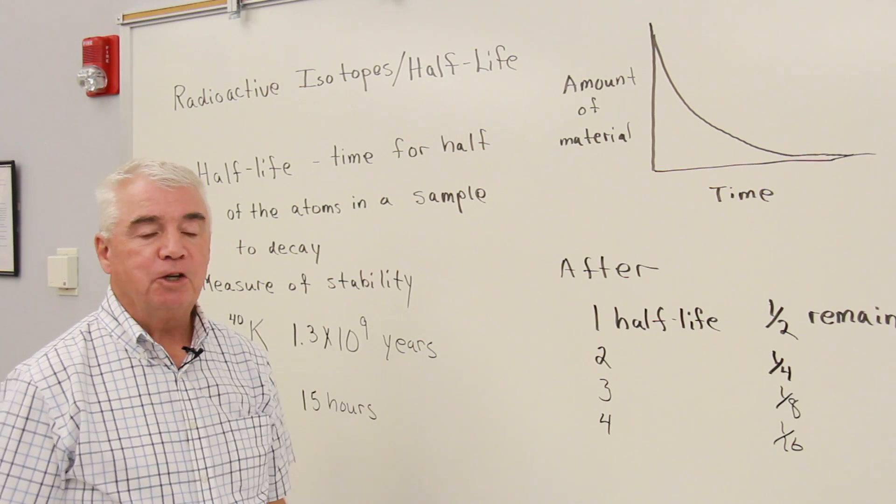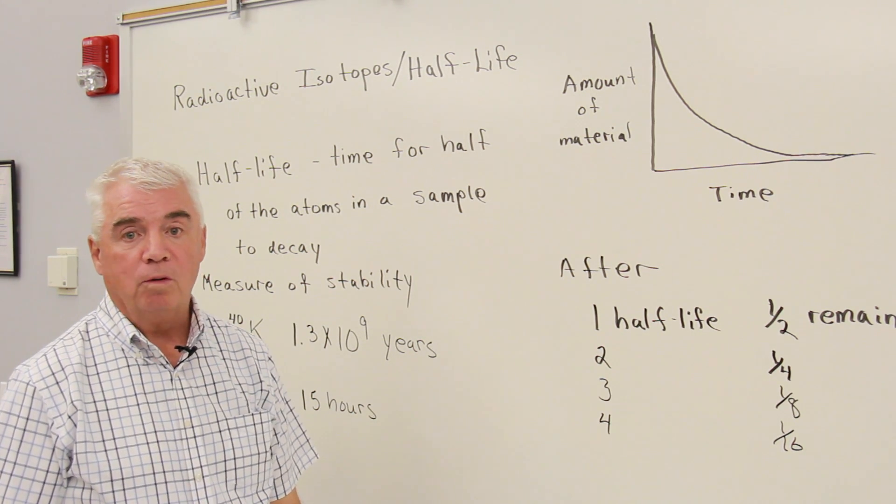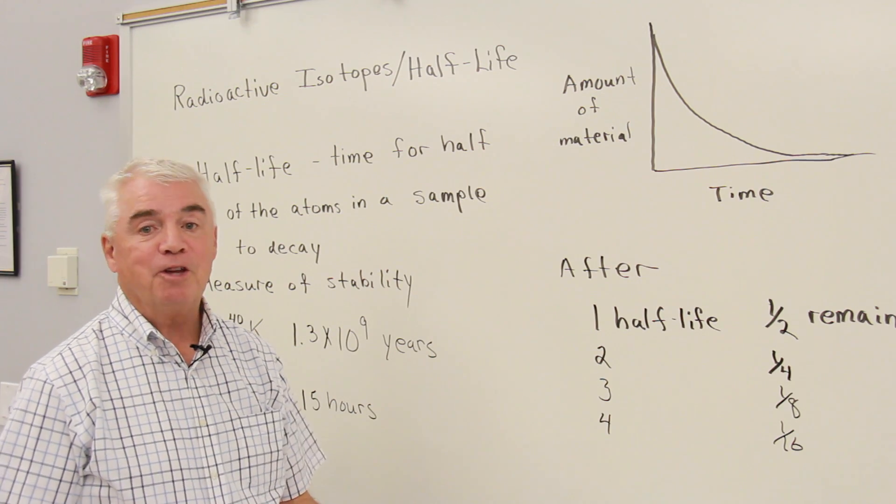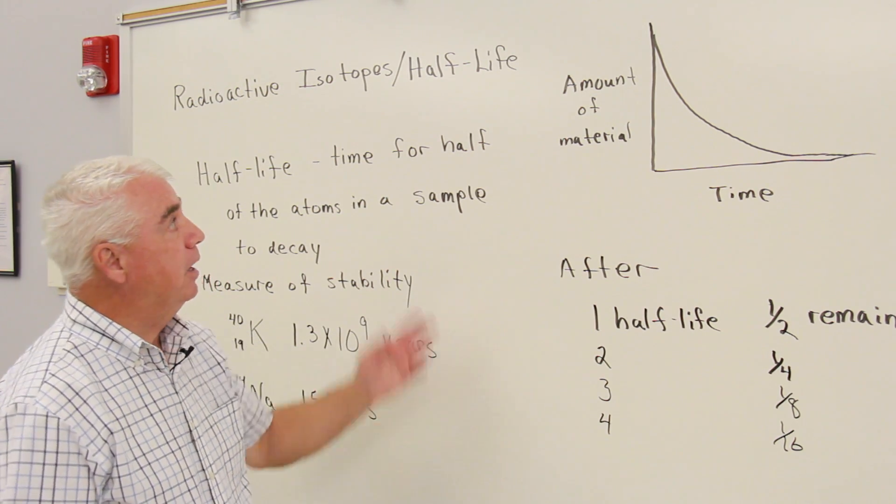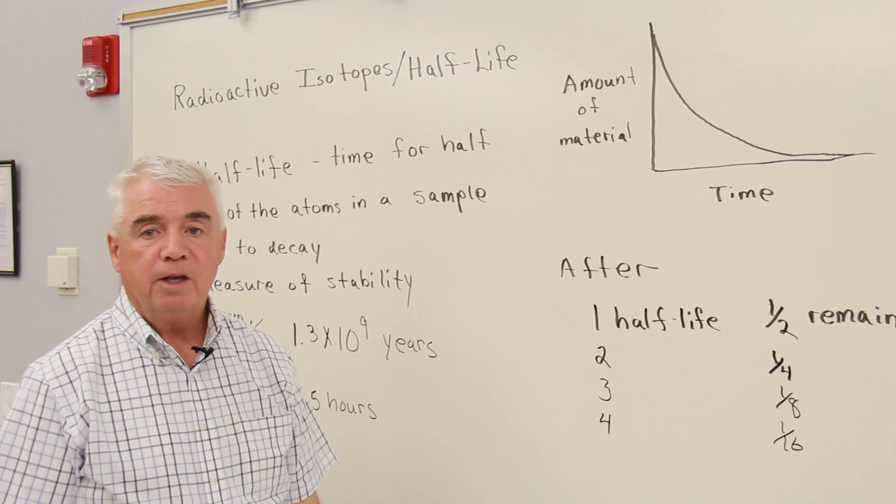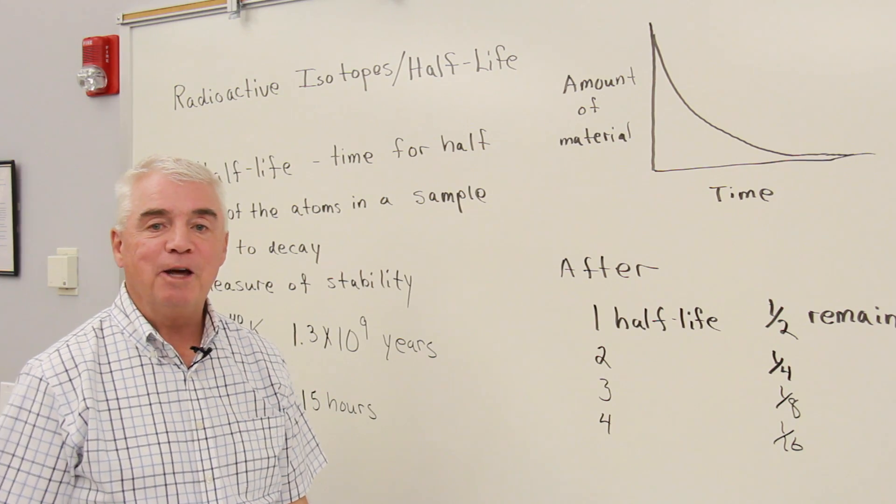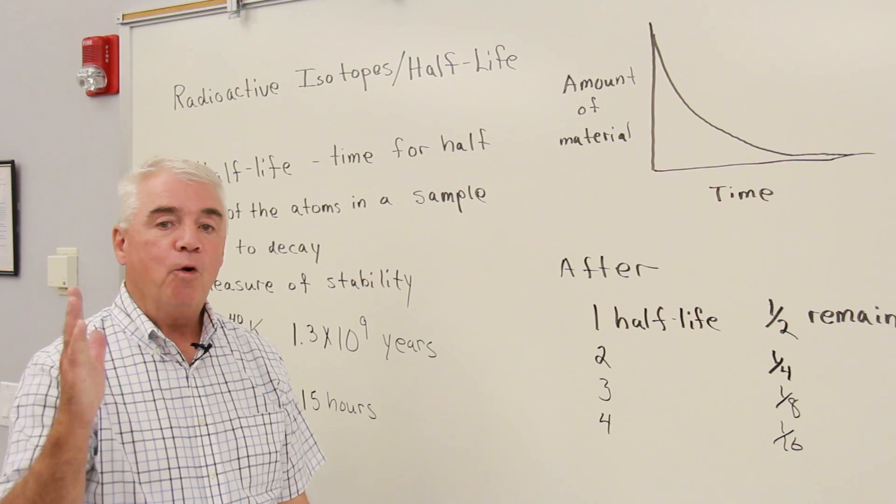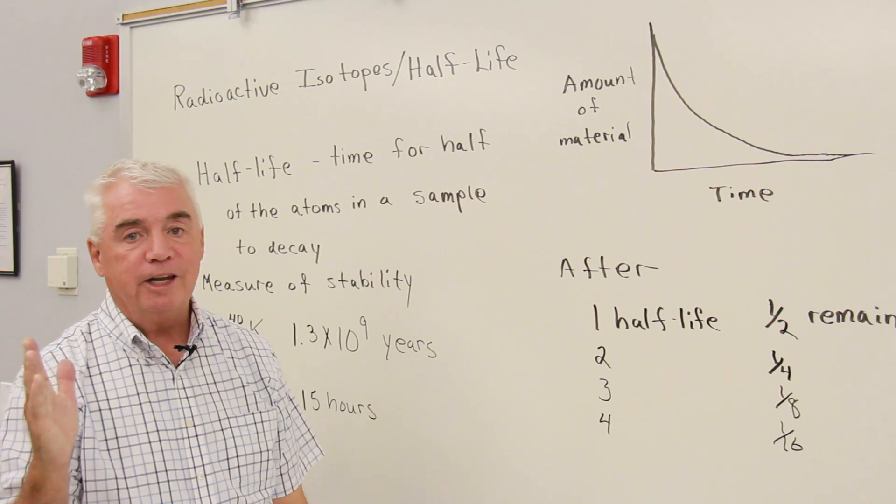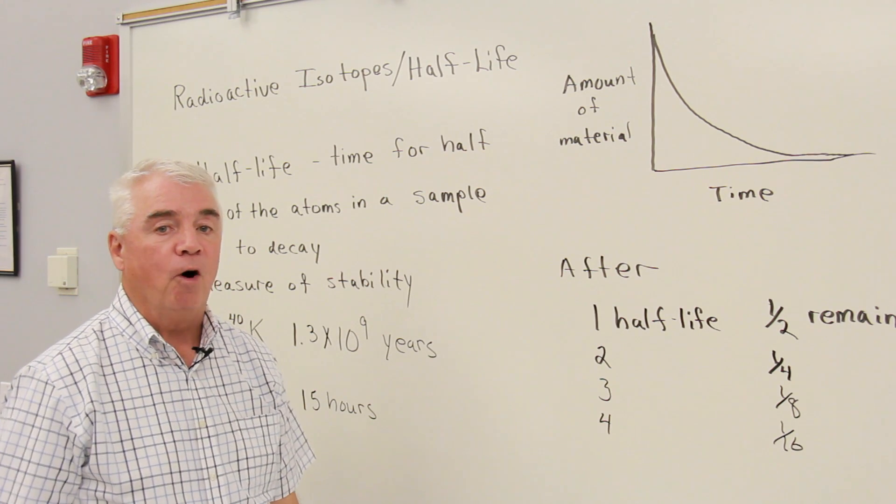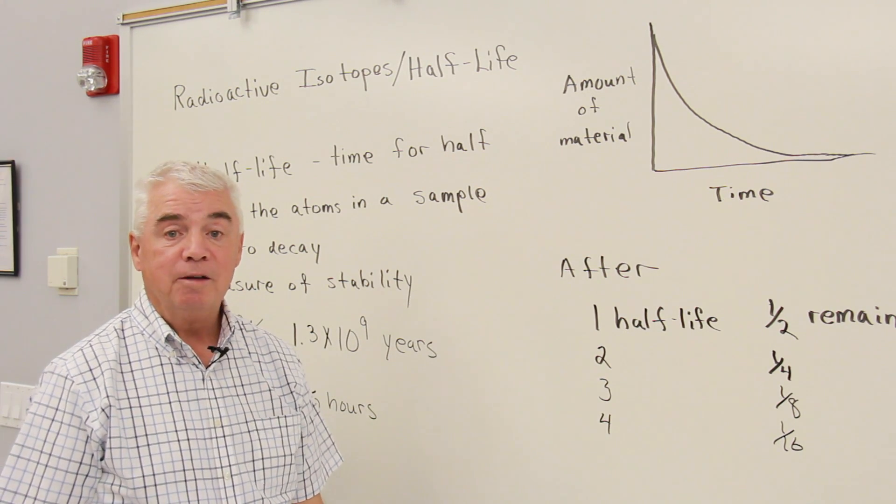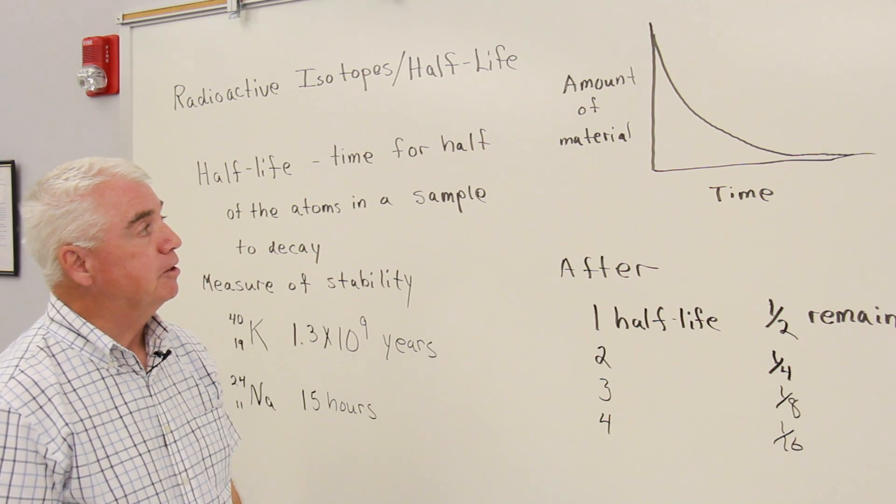A radioactive isotope is unstable, to some degree at least. It's a little bit like if you have someone stand up on a tabletop. You know eventually something's going to happen. Eventually they're going to fall. We may not know when, but sometime they're going to fall.